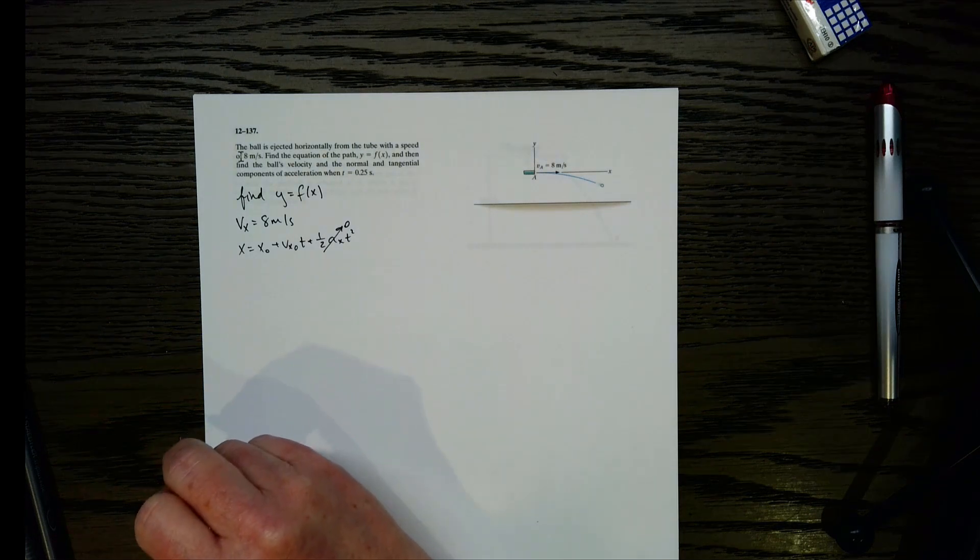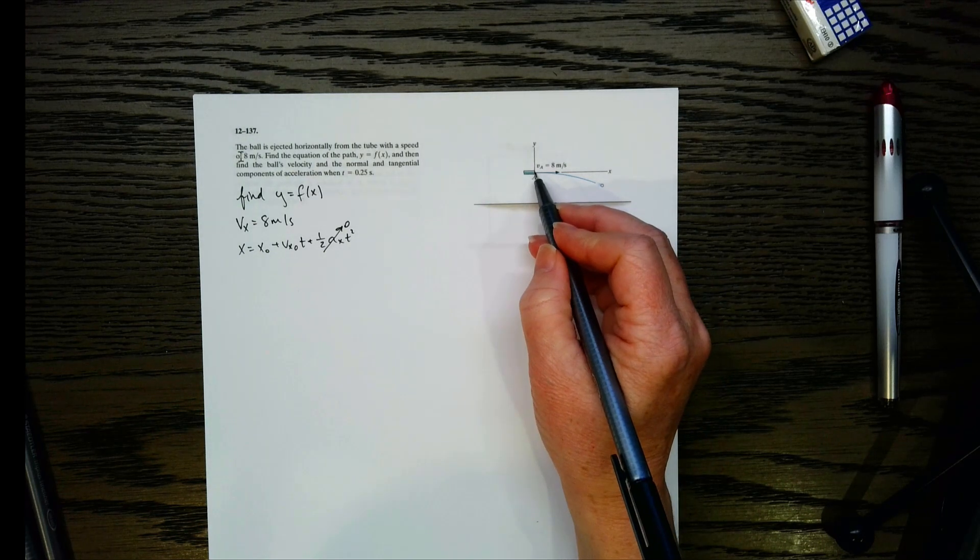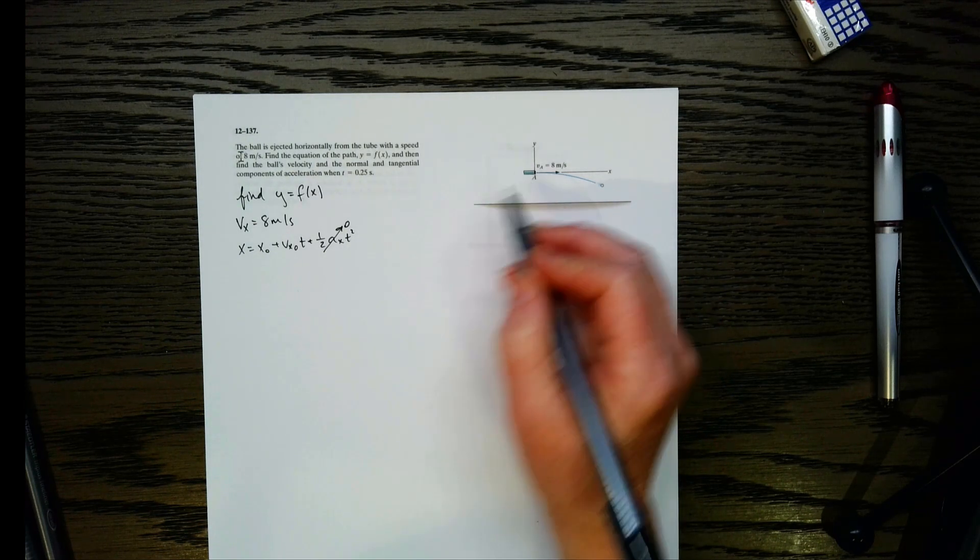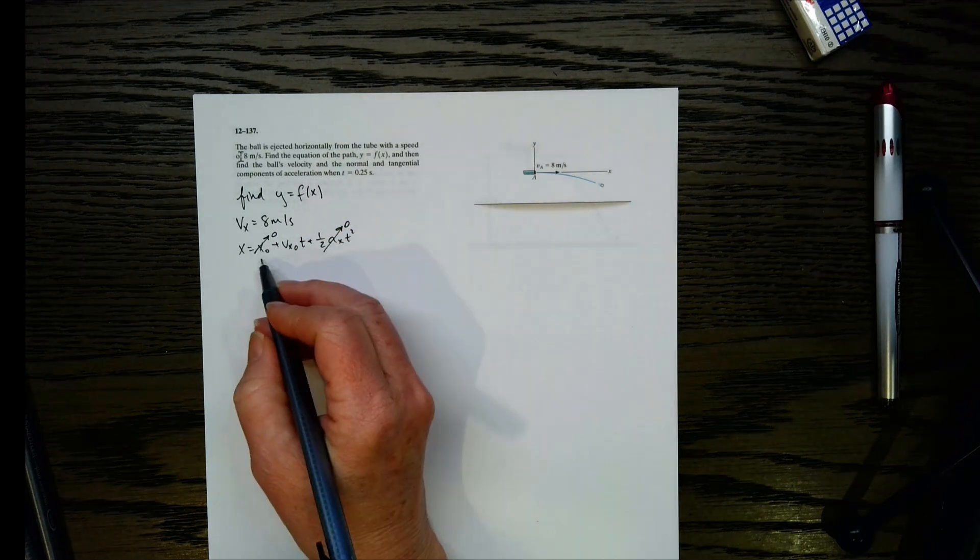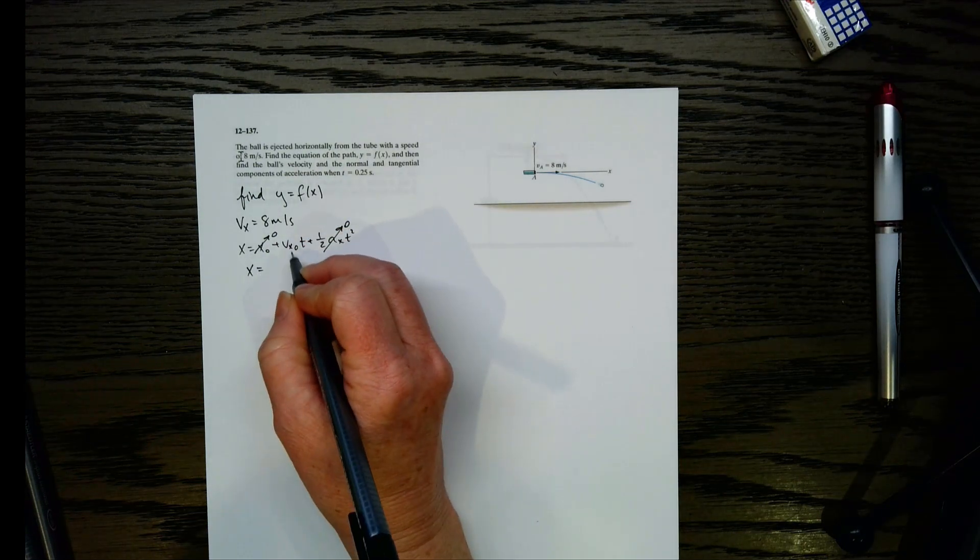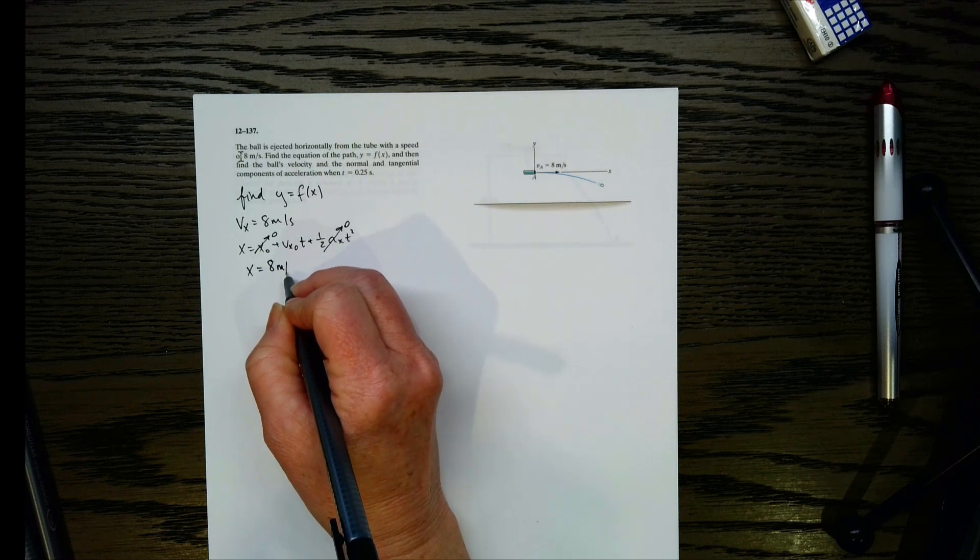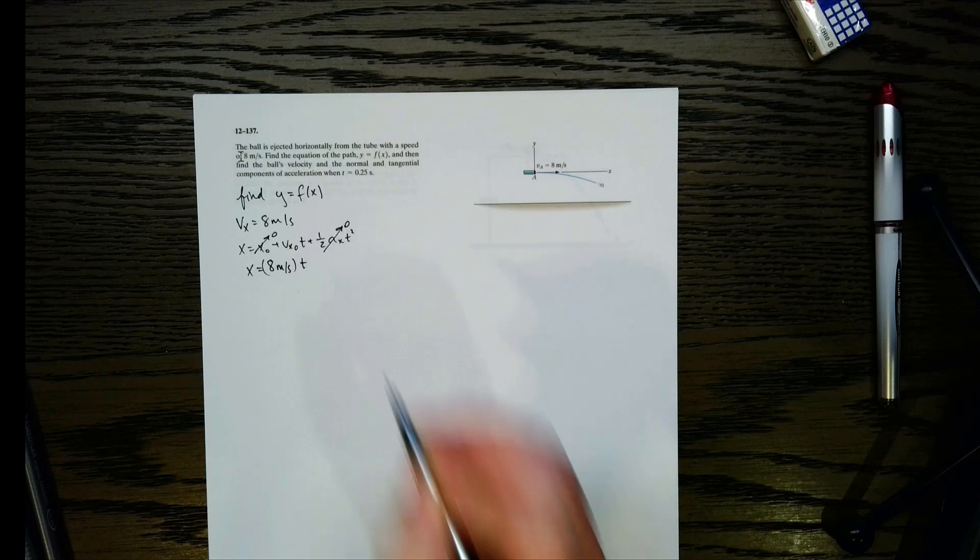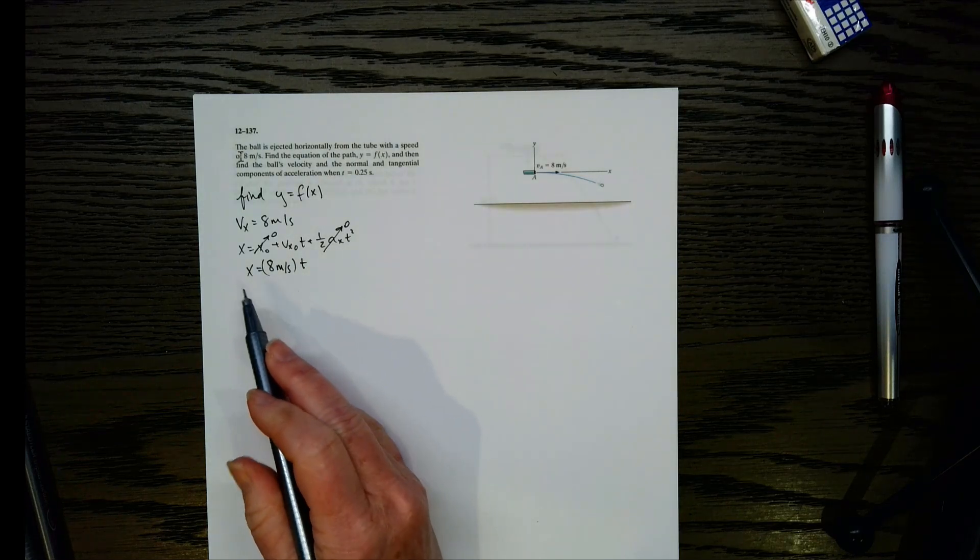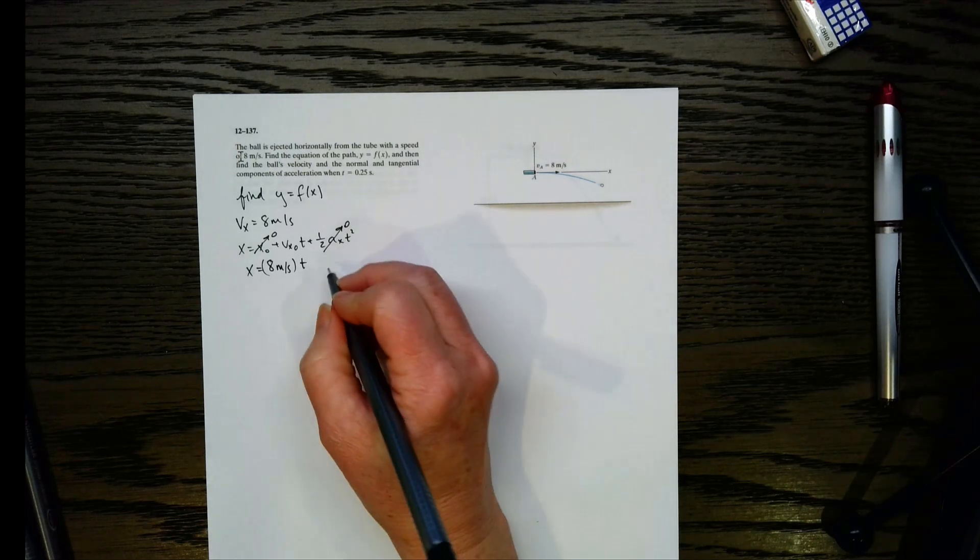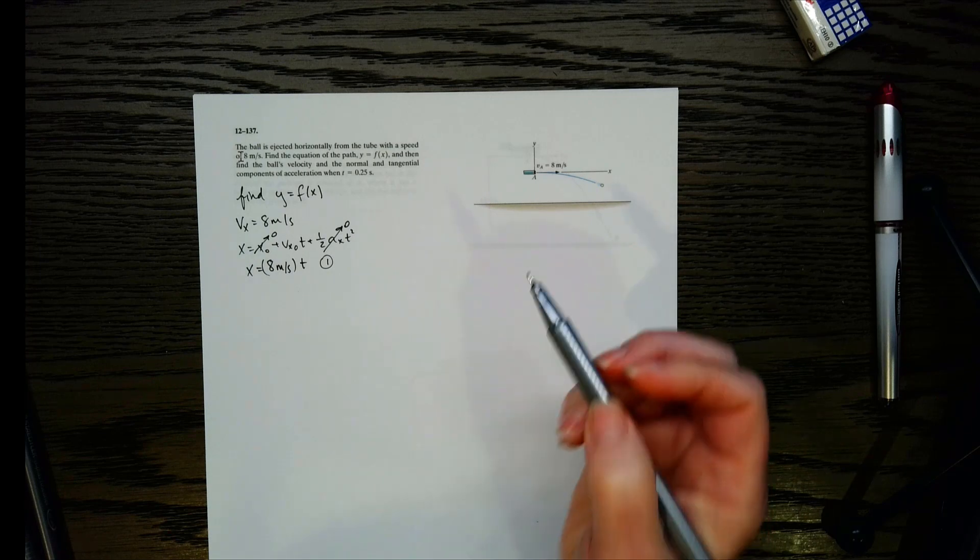Remember we could use this equation for projectile motion, which is kind of what we have going on here. Now, do we have an acceleration in the x direction? No, we don't. It's just shooting the ball out of this tube, and then it just moves under gravity. So basically, gravity is the only thing we have to worry about for acceleration. That is not in the x direction. So this is going to go to 0. And what about our initial displacement x? Well, if I make this right here a the reference point, that's going to go to 0. So with this, I can write x equals the initial x velocity, which is 8 times t. So this gives me an equation for x as a function of t, which is not what we wanted. So let's keep going and see what we can do.